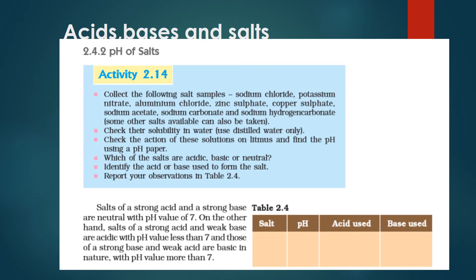Also identify the acid or base used to form each salt. Remember: salts of a strong acid and a strong base are always neutral — meaning pH level is 7. On the other hand, salts of a strong acid and a weak base are acidic, with pH value less than 7. And salts of a strong base and a weak acid are basic in nature, with pH value more than 7.